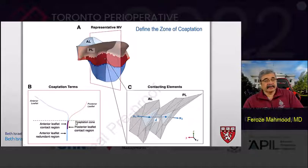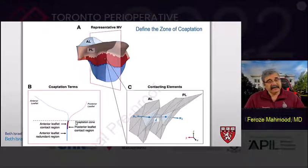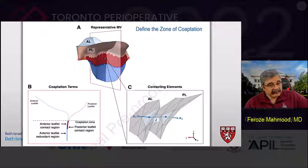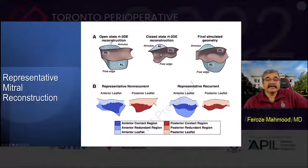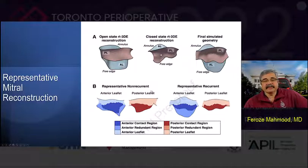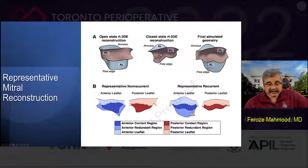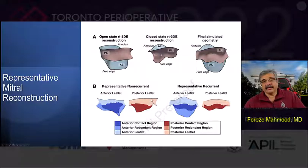The common wisdom is that the more coaptation zone you have, the better the repair — because that's kind of the holy grail of all mitral valve repairs: to generate a greater apposition between leaflets, both anterior and posterior, which implies the valve has more structural reserve and can sustain geometric distortions. The representative mitral valve reconstructions demonstrated an open state with real-time three-dimensional echocardiography showing the annulus and the free edge. In the closed state reconstruction and final simulated geometry, opening the valves demonstrated a significant coaptation zone between anterior and posterior leaflet, as well as a redundant leaflet — most notably the anterior leaflet — which extended beyond the plane of the mitral valve.